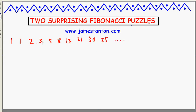For example, 2 plus 3 gives the next term 5. 3 plus 5 is 8, 5 plus 8 is 13. There's so much information about the Fibonacci numbers out there, so if you just search on the internet for this sequence of numbers, you'll find gobs and gobs of material that will just astound you.